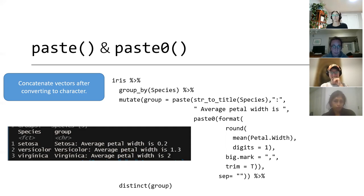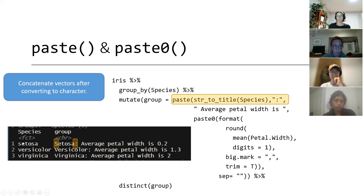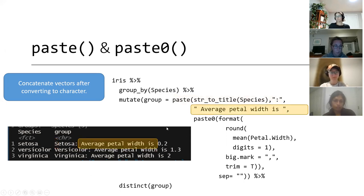R has some elegant ways to do that, and one of them is the paste and paste0 function. I pulled up an example using the iris dataset. The first thing I did — if you look at the species column — the species are lowercase and I wanted them to be upper case, so I used the str_to_title function. Then I'm pasting in a colon and purposefully adding spaces, because later I'll tell paste to separate with nothing in between. Then I use paste0 format because it helps with the awkward spacing that sometimes gets put around values.